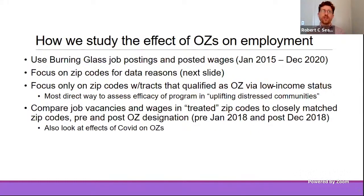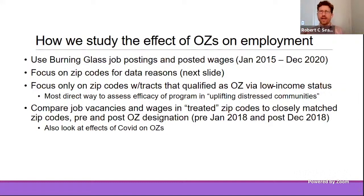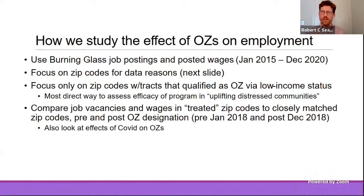We use Burning Glass job posting and posted wages data from January 2015 to December 2020. We focus on zip codes that have one or more opportunity zones and compare them to zip codes that could have had a tract that qualified as an opportunity zone but didn't — our control zip codes. We intentionally focus on low-income status census tracts and compare job vacancies and wages pre and post the opportunity zone designation. We'll also discuss early findings on the effects of COVID.